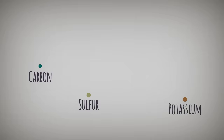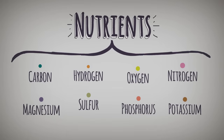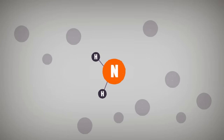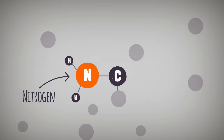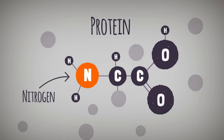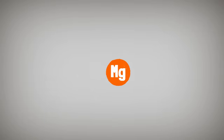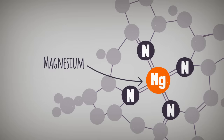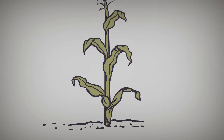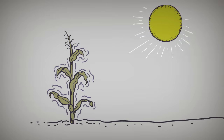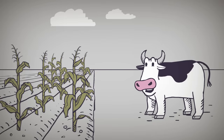Many of these common elements are important because they are nutrients for plants and animals and are often the ingredients for vital substances. For example, nitrogen is an essential component of proteins — the basis of muscle in animals. Likewise, magnesium is used to make chlorophyll, that critical substance that plants use to absorb light energy.